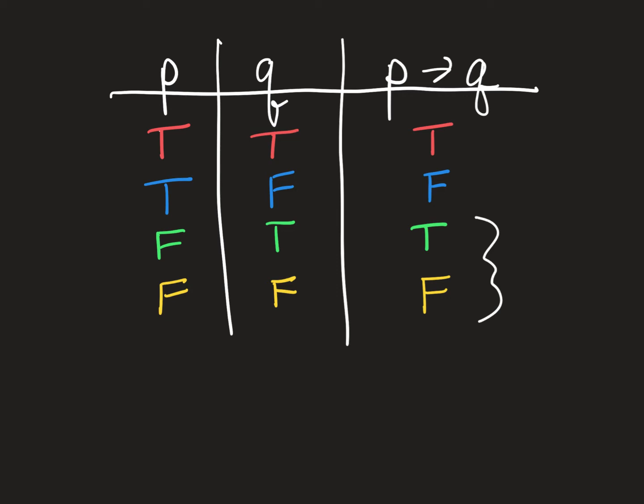Let's think about this using our examples. In example a, we said if there are no clouds in the sky, then it is not raining — both of those are true, so our conditional is true. For the triangle example: if a figure is a triangle, then it has three sides — both true. But if we said if a figure is a square, then it has three sides — that's false, so that statement would be false.